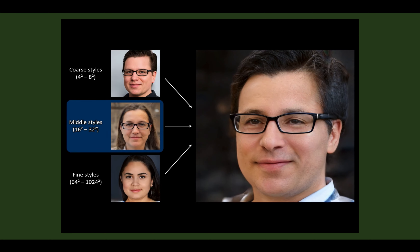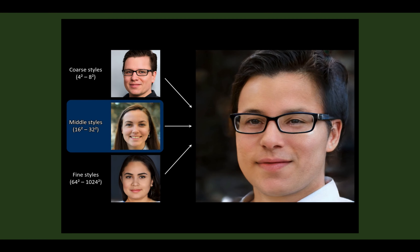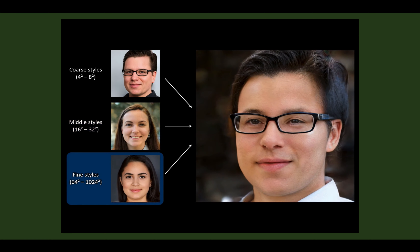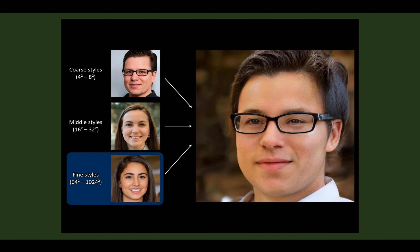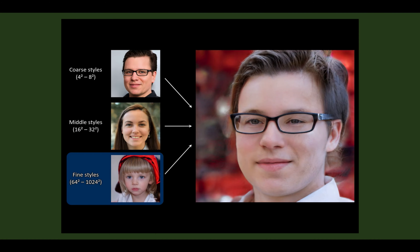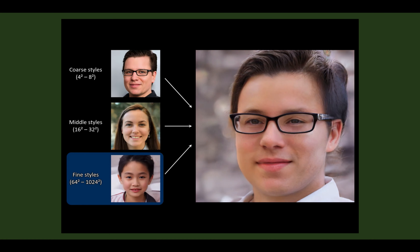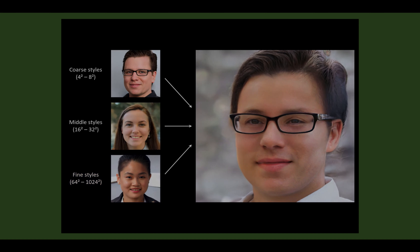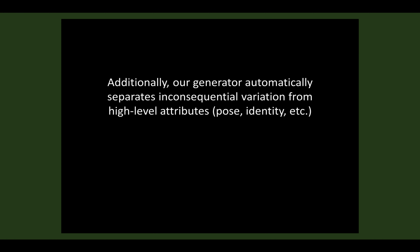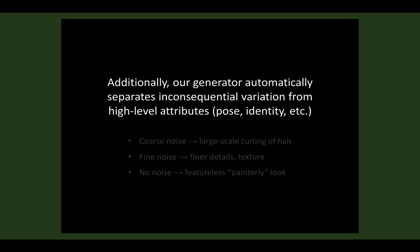How you go about doing this is through what's called the W network. StyleGAN introduced a mapping network that maps from W space to Z space. Z space is what we call latent space. The W space is more of a mapping network. I won't get too deep into this — I'll cover it in another video.